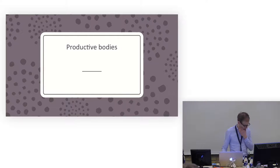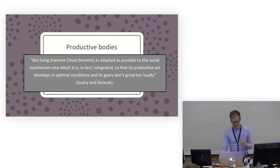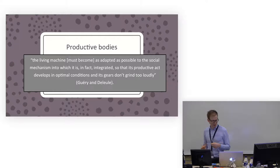So first, in terms of productive bodies. So I'll suggest that, well, actually no, I'll just put this quote up. So this is from Gray and Delay. My French pronunciation is not too good. This is kind of the mantra for this section. They suggest that the living machine must become as adapted as possible to the social mechanism into which it is, in fact, integrated, so that its productive act develops in optimal conditions and its gears don't grind too loudly. They were talking about mid-20th century psychology and suggesting its place within enabling the integration of individuals into the productive processes of capitalism. They don't want their gears to grind too loudly. They just want them to get on with being productive. And I think we can see the aspects of self-tracking I'm discussing as being part of a similar kind of process.